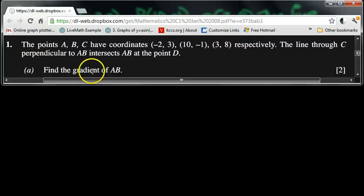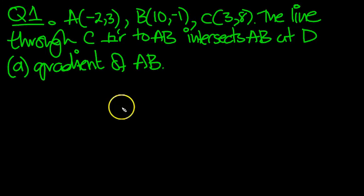Part A of question 1, we need to find the gradient of AB, where A and B are these two points here. So let's put them down and find the gradient. That's the first part of the problem.